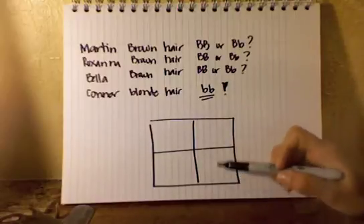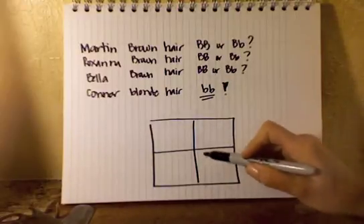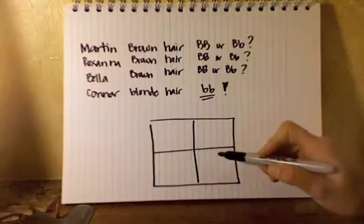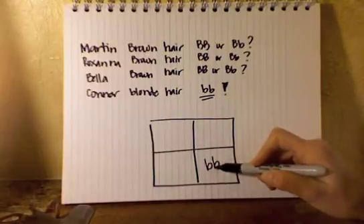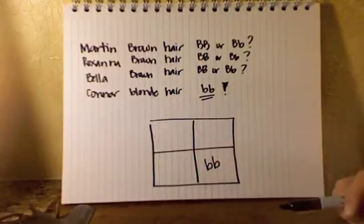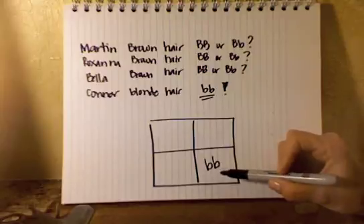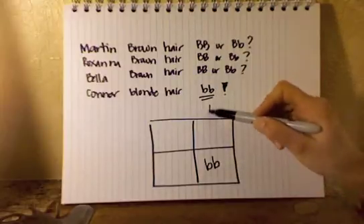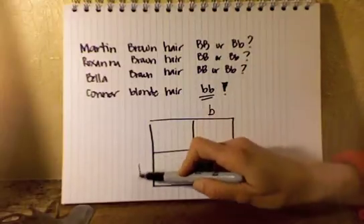So somewhere in this Punnett square for my family, there has to be a child. The children go on the inside. That is little b, little b, because Connor's my child. In order for him to have two little b's, he had to receive one little b from each parent.